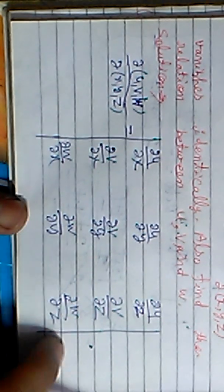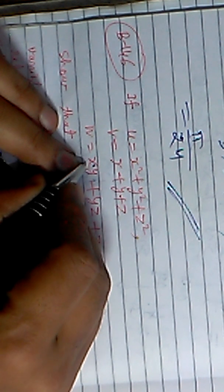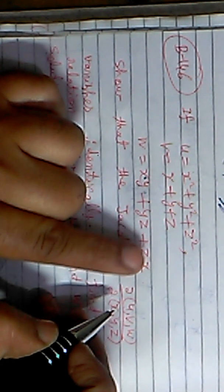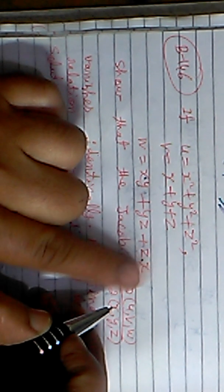For the third row, we differentiate w = xy + yz + zx with respect to x, y, and z. When differentiating with respect to x: y is constant so xy gives y, yz gives 0, and zx gives z — so ∂w/∂x = y + z. Similarly, ∂w/∂y = z + x, and ∂w/∂z = x + y.